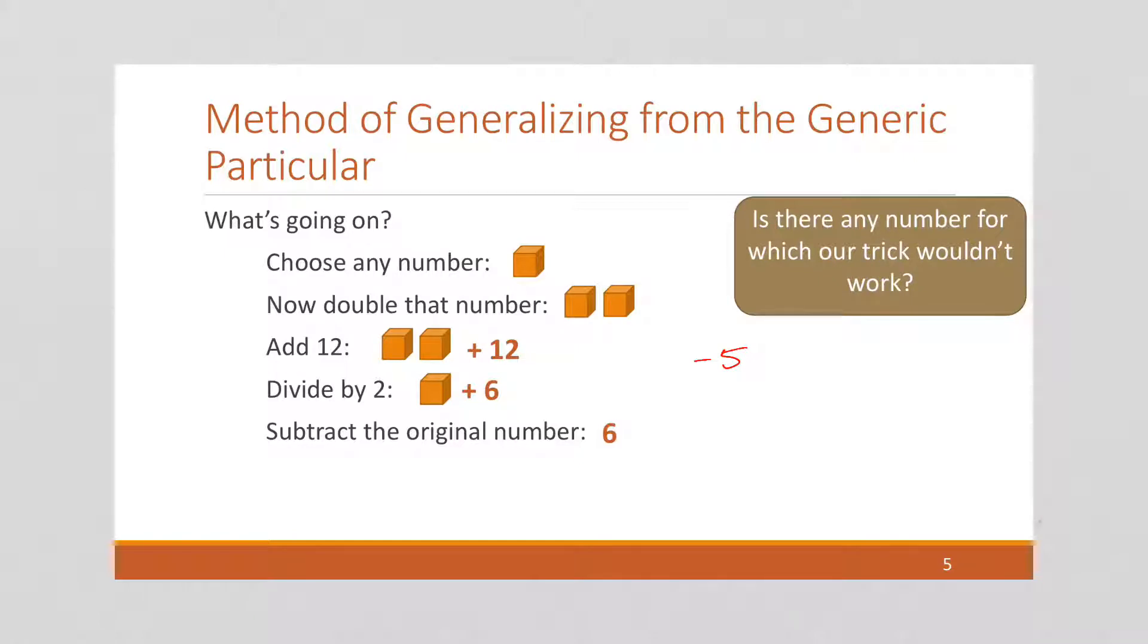We double it and we get negative 10. We add 12 to it, which gives us a positive 2. And we divide that number by 2 and we get 1. We subtract our original number. Well, our original number was negative 5, so I'm going to subtract a negative 5, giving us 6. So see, it doesn't matter what number we start with. This trick will always work, because we kept things generic.